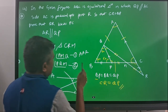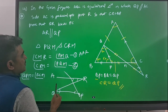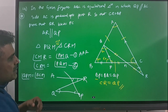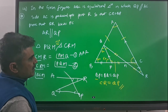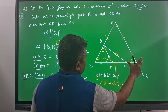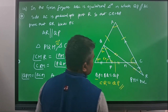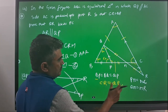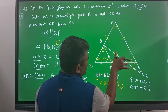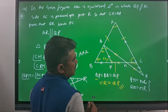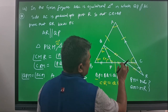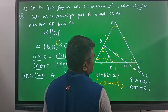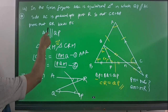We now have a side relation and two angle relations. From these, triangle PQM is congruent to triangle CRM by AAS. From this congruency, the respective sides are equal: PM equals MC, and QM equals MR. Since both diagonals are bisected at M, PC and QR bisect each other — and that means QR bisects PC, which is what we needed to prove.